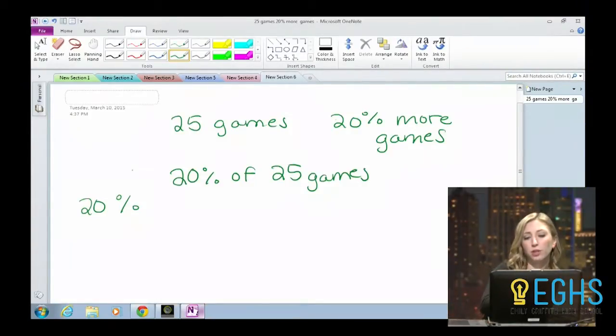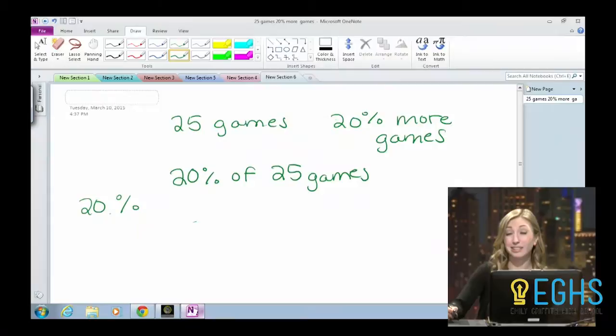So what we're doing is we want to turn that 20% to a decimal first. And the way that you do that is you take the decimal where it is now, which is right after the 0, and you're going to move it to the left two spots. Oh, gotcha. So it would be like .20. Or we can even use .2, same thing.